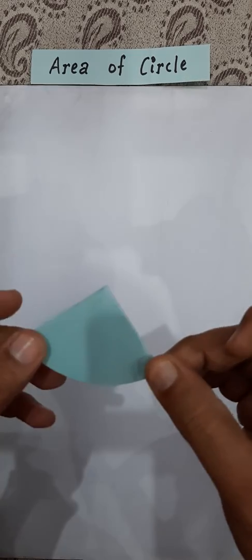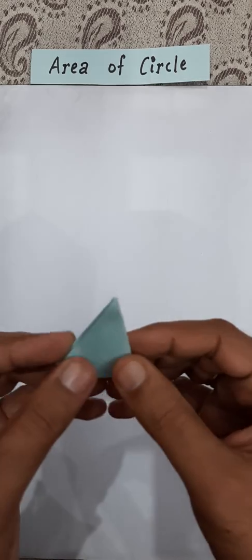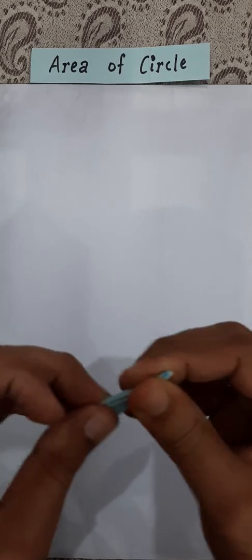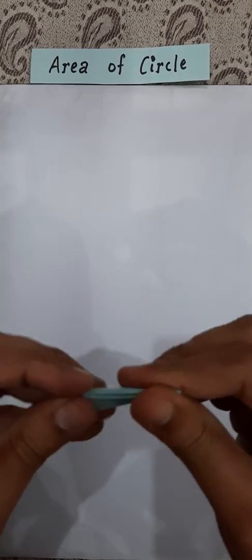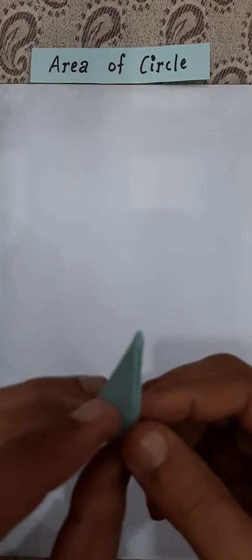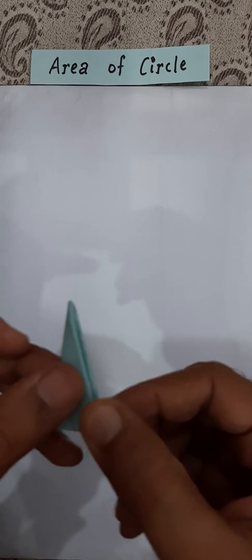In the same manner, you will fold it a third time and then finally the fourth time. In this way you will form sectors, and then in the same manner you will be folding the second circle also.